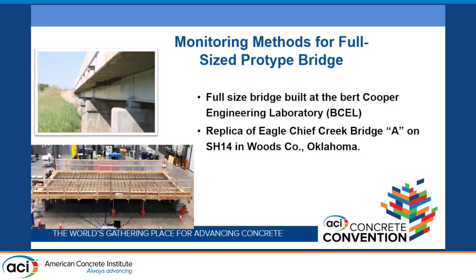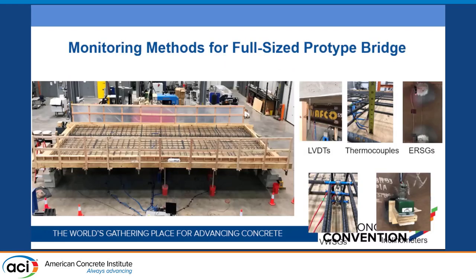The prototype bridge is a full-size bridge built inside the Burt Cooper Engineering Lab at Oklahoma State University. It's a replica of the Eagle Chief Creek Bridge, Bridge A, in State Highway 14, Woods County, Oklahoma. It was about 40 feet long, had two steel girders at six feet apart, and the bridge was about 14 feet wide with a four-foot overhang. We installed at least 100 sensors in the bridge.